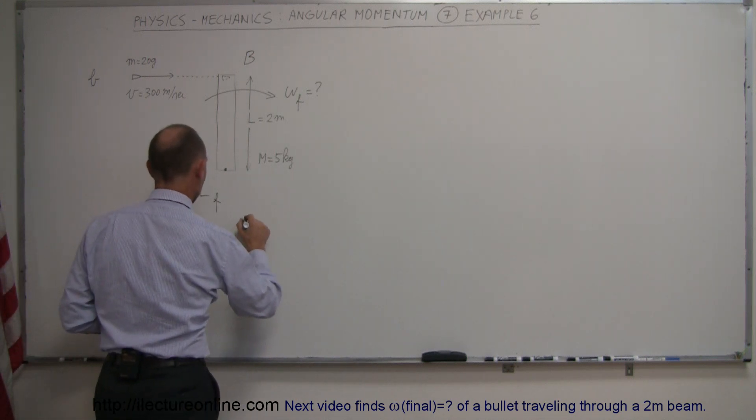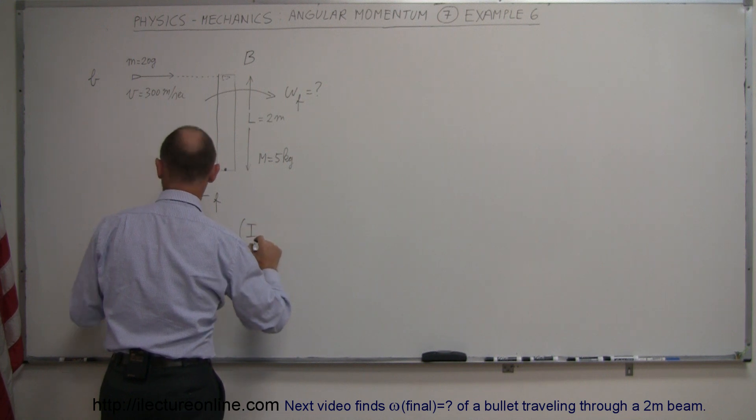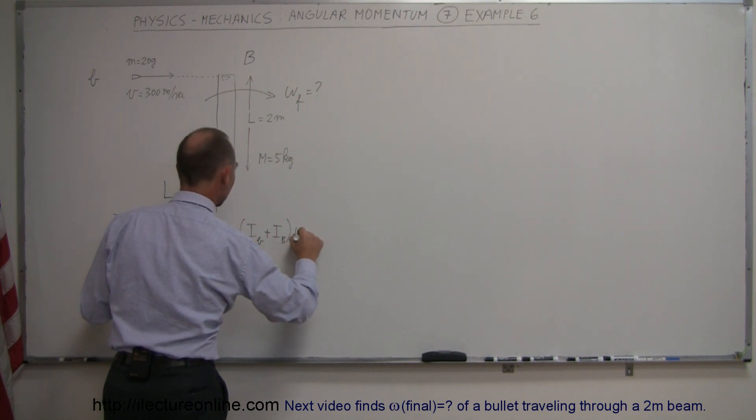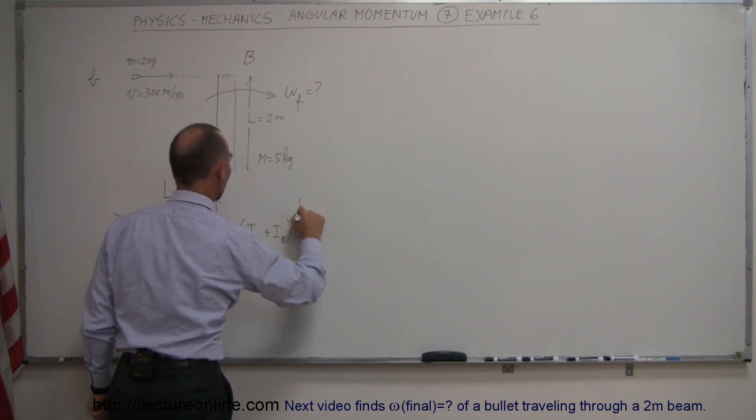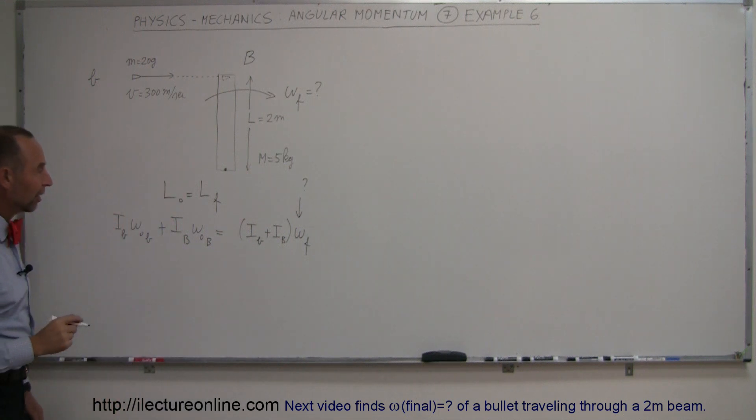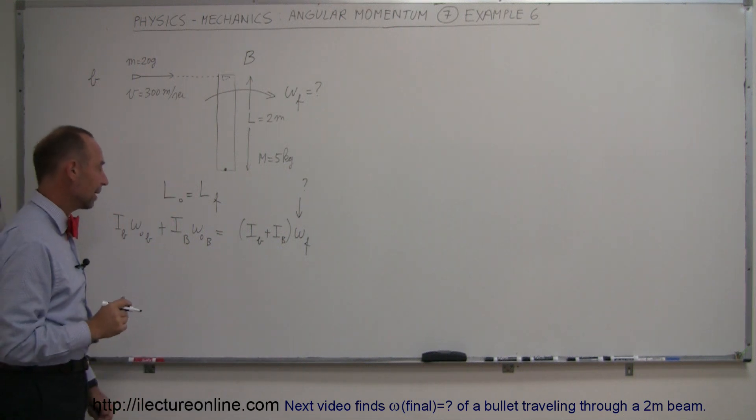I'm assuming that they are embedded, that the bullet is embedded, so the moment of inertia will then combine. The moment of inertia of the bullet plus the moment of inertia of the beam times the combined final angular velocity. And that is what we're looking for: the final angular velocity of the beam and the bullet combined.